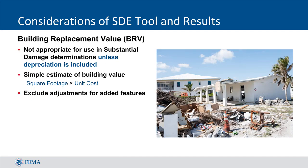Building Replacement Value, or BRV, is not appropriate for use in substantial damage determinations unless depreciation is included. Building value can be calculated by multiplying the unit cost by the number of square feet; however, it does not include adjustments for add-ons such as enclosed porches and garages.